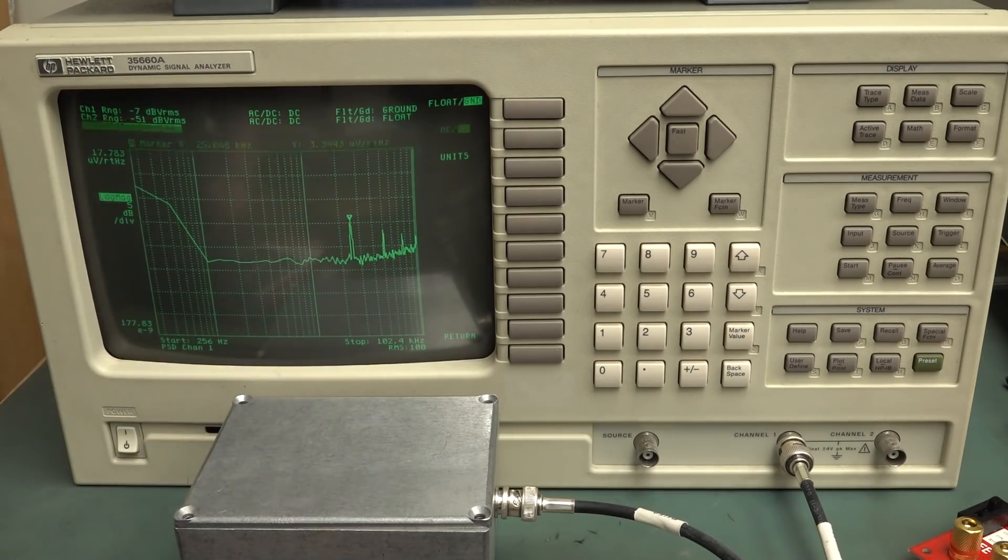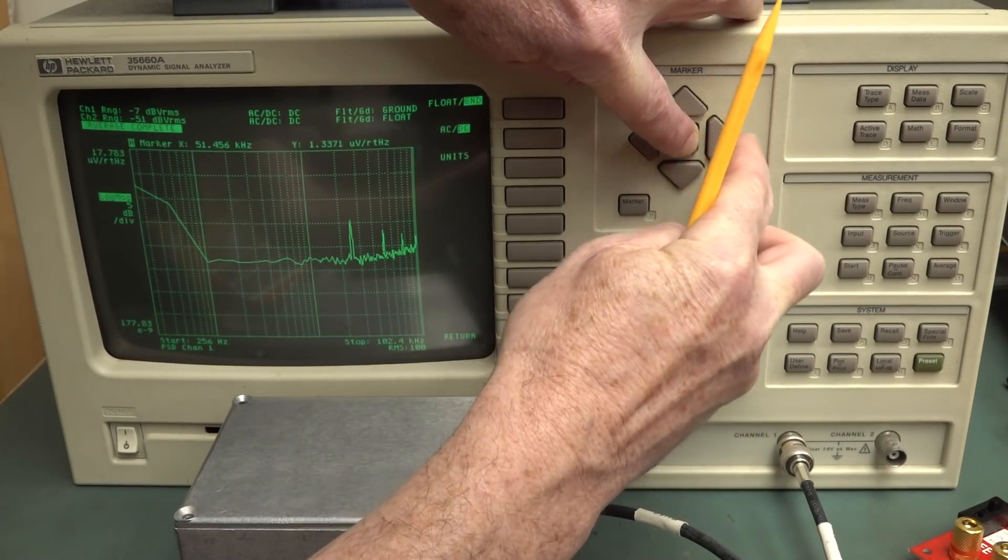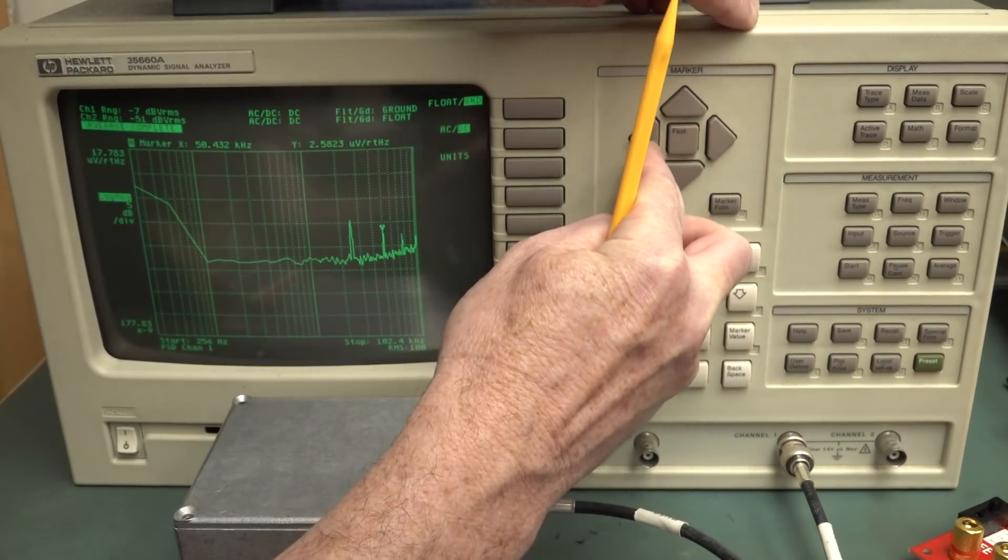So what is this 25 kilohertz spike here? And look, there's two other spikes here. And if I go over, I've got to use the fast mode because otherwise it's going through 400 points.